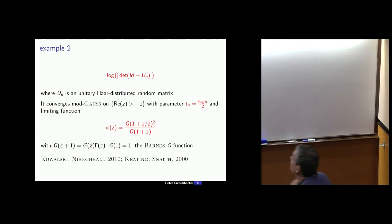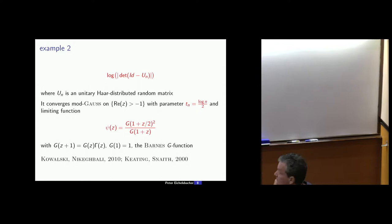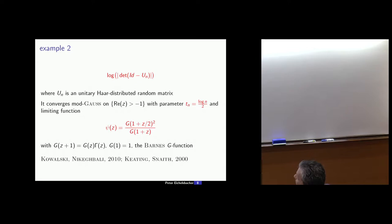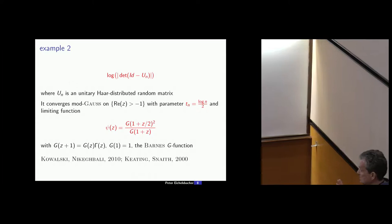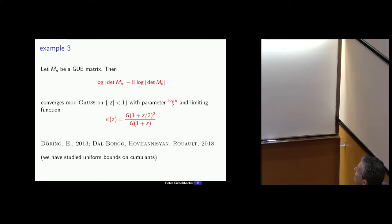There are many examples in the literature with mod-Gaussian or mod-phi convergence. A very nice one from random matrix theory: consider an arbitrary Haar-distributed unitary matrix and its log characteristic function. This converges mod-Gaussian with parameter sequence Tn approximately log n, and a concrete limiting function given by the Barnes G-function, where the Barnes G-function solves the identity involving the classical gamma function. This result appears in a very nice paper by Keating and Snaith, but formulated in the language of mod-Gaussian convergence by Kowalski and Nikeghbali.